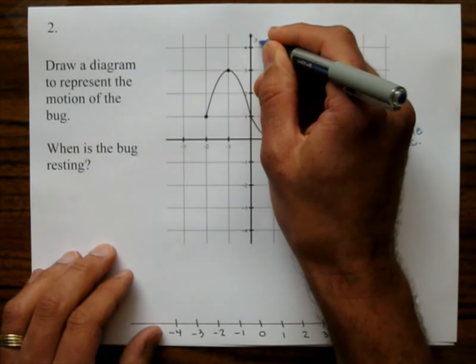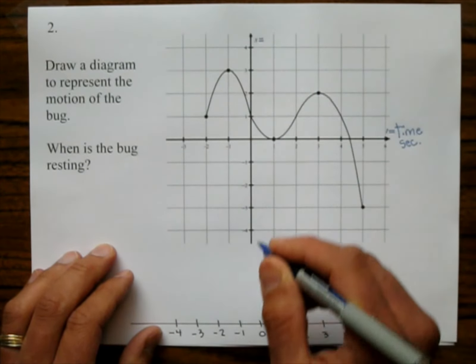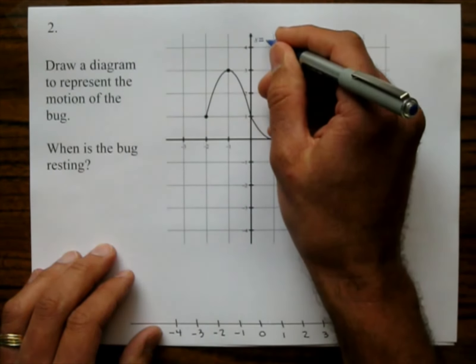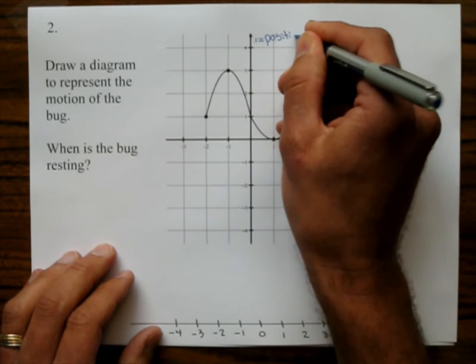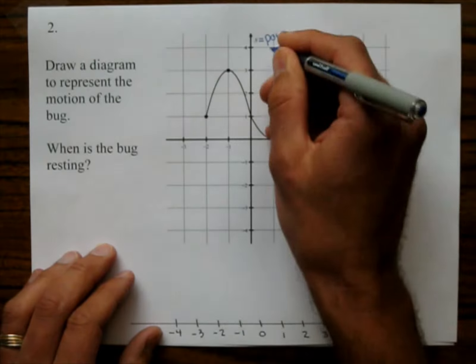And the output, which is the y-axis, represented by the y-axis, is position on the number line, represented by feet.